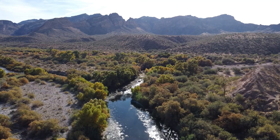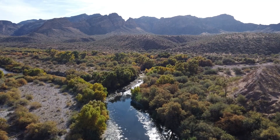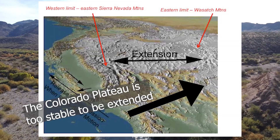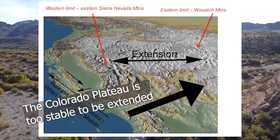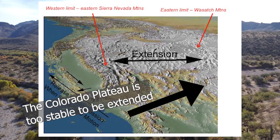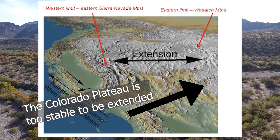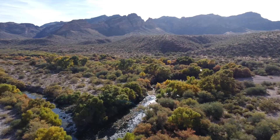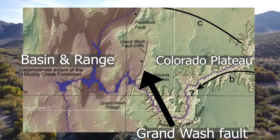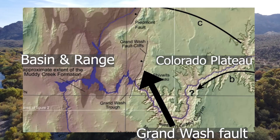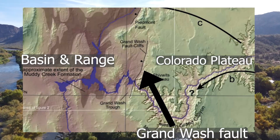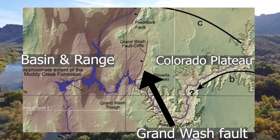Since the Colorado Plateau is still very tectonically stable, it is hard for the extensional forces that are generating the basin and range, which is on way less stable crust, to affect it. Decent sized faults like the Grand Wash fault separate the provinces, painting a pretty clear margin between the geologic zones.